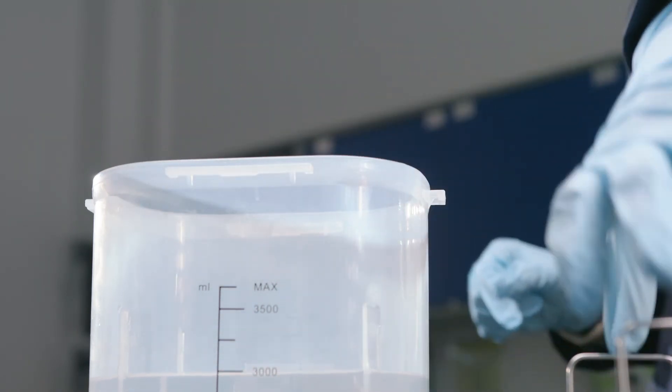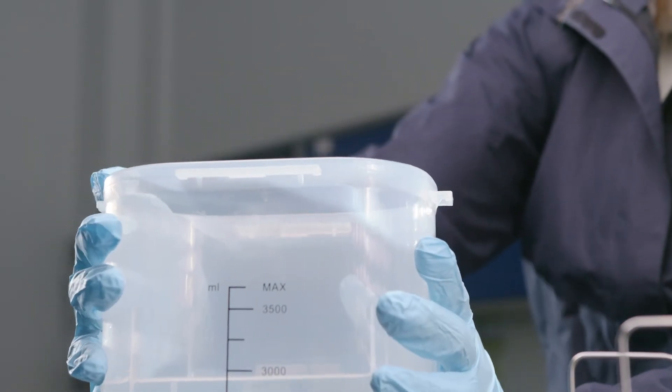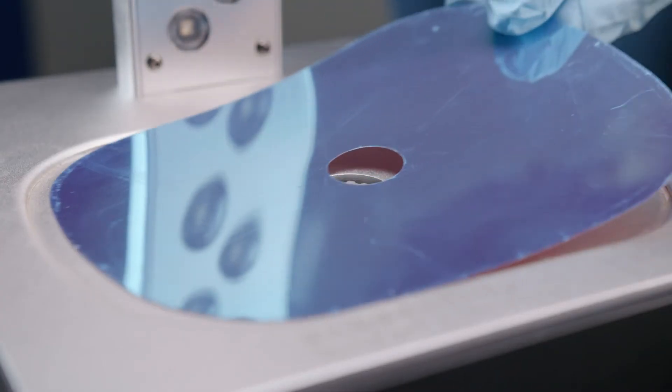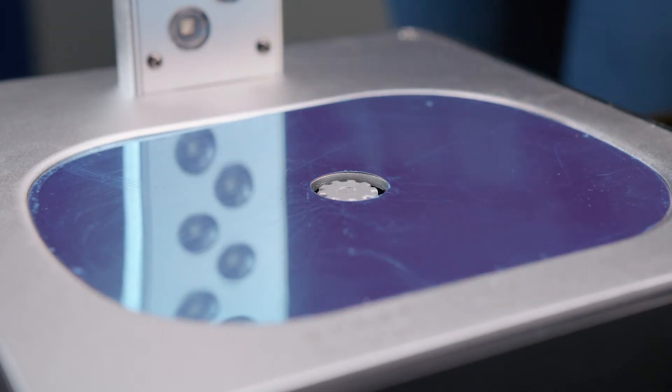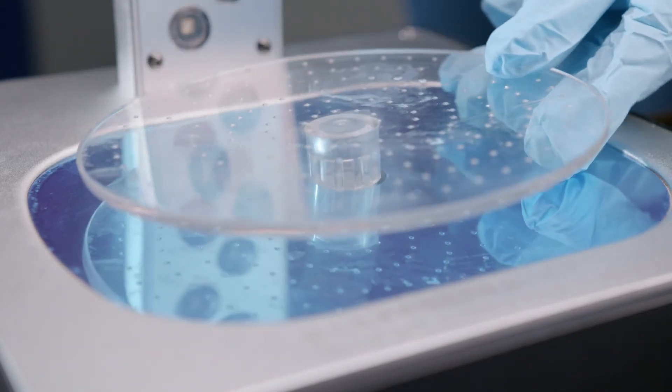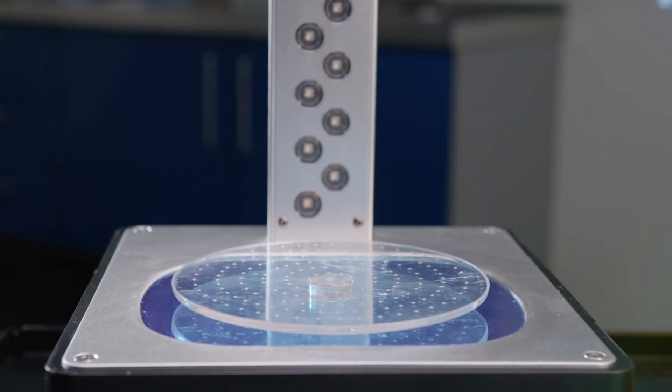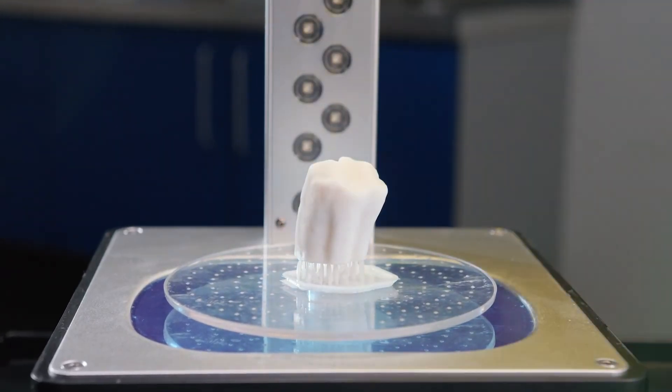The post-processing station is converted for curing. To do this, place the mirror foil on the floor and insert the corresponding rotating disc. The tooth must be placed on this disc. The station must be closed with the lid.